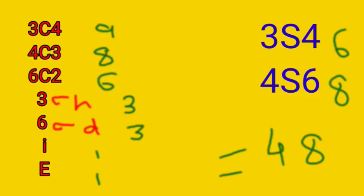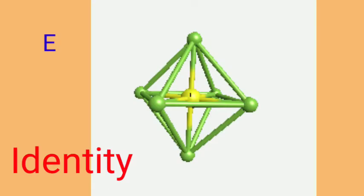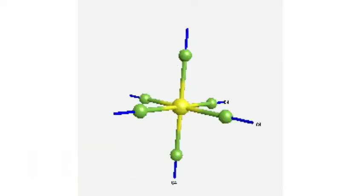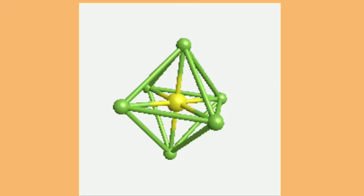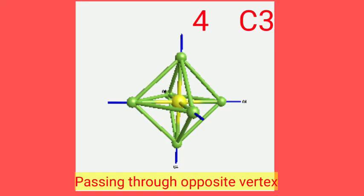Operations of each symmetry element have been discussed in previous videos. First we discuss identity — we leave the molecule as such. We can see that there is one sulfur atom bonded with 6 fluorine atoms in an octahedral arrangement. The shape of this molecule is octahedral and if we draw the octahedral around this molecule, there are 6 vertices.